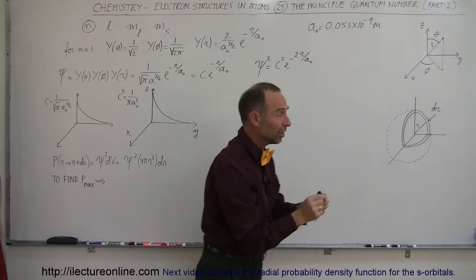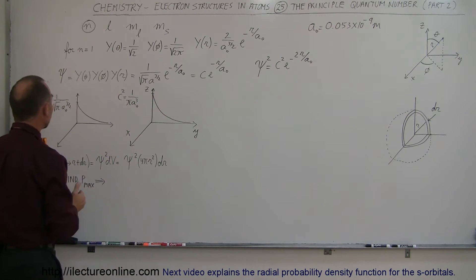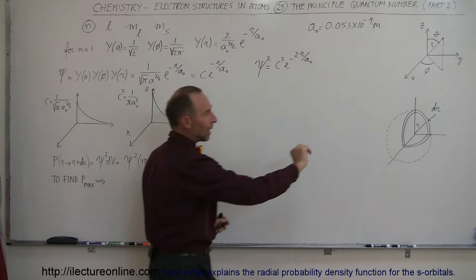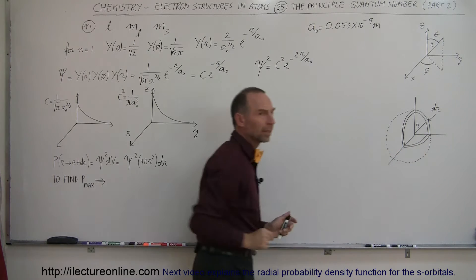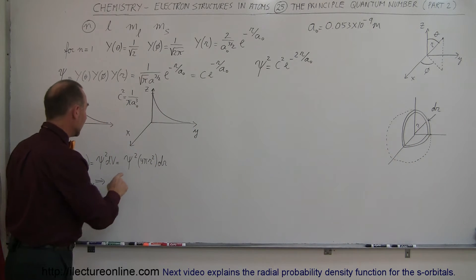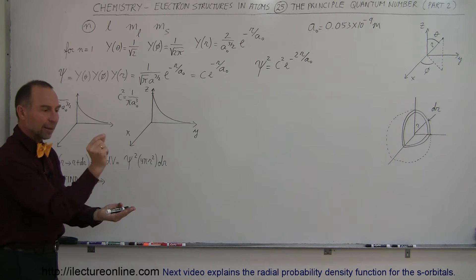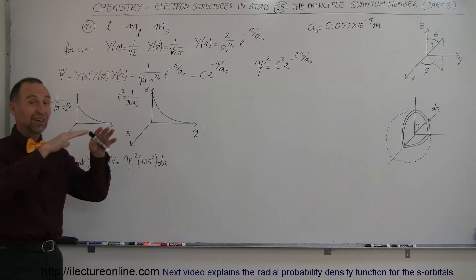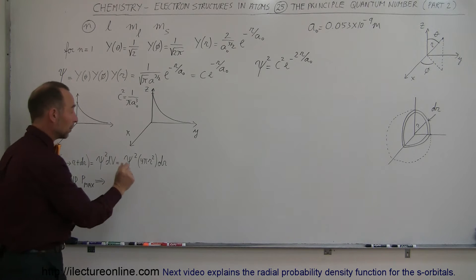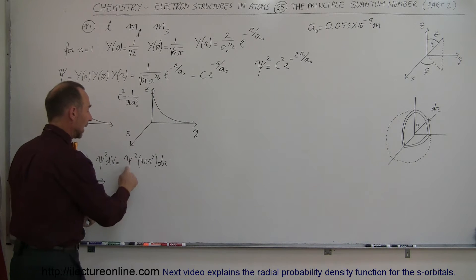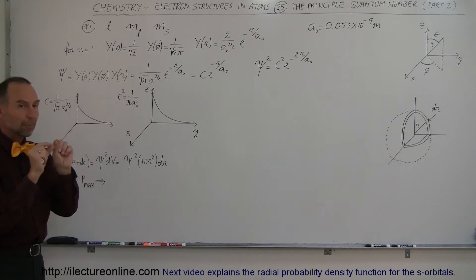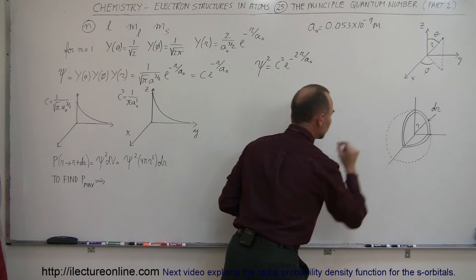How do we do that? All we have to do is take the probability density function, which is the wave function squared, times the volume occupied by this little thin shell. The way you find that volume is to think of it as a surface area times a certain thickness. The surface area will be 4πr², because that's the surface area of a sphere, and we multiply times a small thickness dr. This gives us the function defining the probability of finding the electron in this particular region.